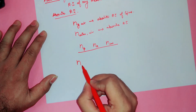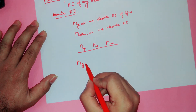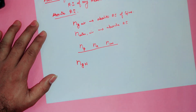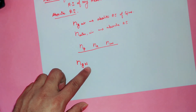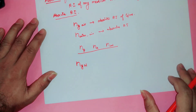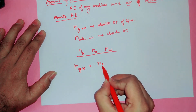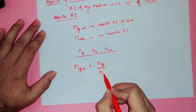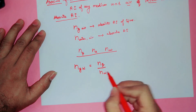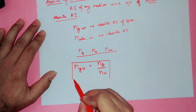Suppose the refractive index of glass with respect to water is given. This equals the absolute refractive index of glass divided by the absolute refractive index of water: n_gw = n_g / n_w. This is the formula.